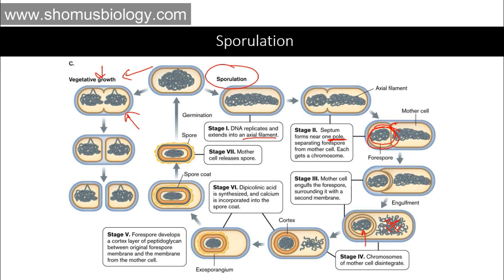Dipicolinic acid is synthesized and calcium is incorporated into the spore coat. The dipicolinic acid is synthesized and calcium deposits on the surface of the spore membrane. So inside the spore there is the bacterial chromosome, surrounded by a double layer of cell membrane, and outside, dipicolinic acid and calcium deposit to form a very hard shell on the surface. Once the spore coat is fully formed, the forespore develops a cortex layer of peptidoglycan between the original forespore membrane and the membrane from the mother cell.